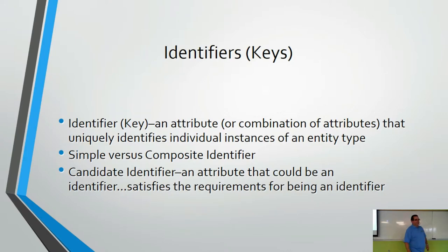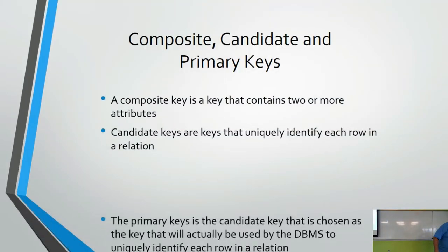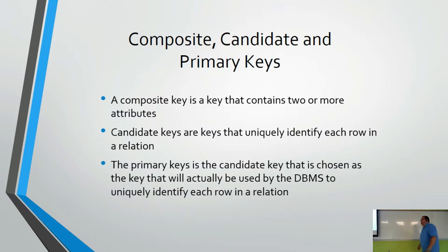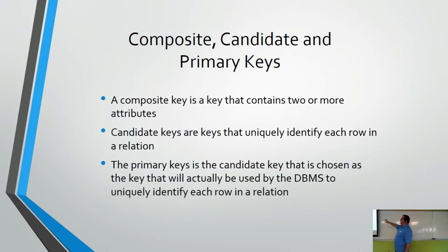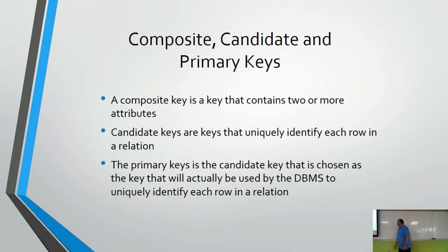Sometimes all the candidate keys are unsuitable, and you choose none of them — I'll get to what you do in that case shortly. A candidate key uniquely identifies each row in a relation; the primary key is the candidate key actually chosen by the database to uniquely identify each row. The primary key rules the table — whether it's a simple single field or a composite key.